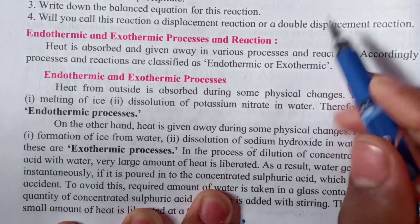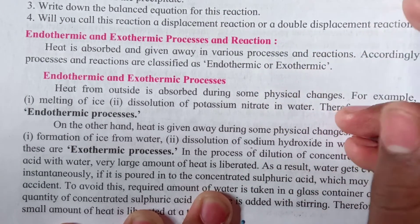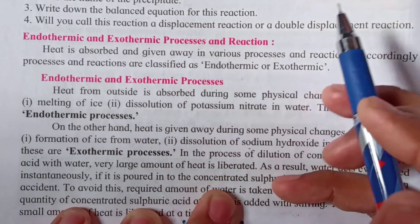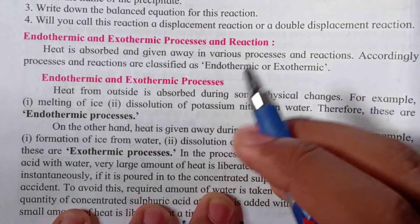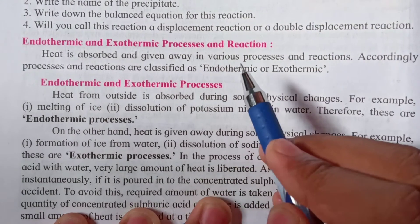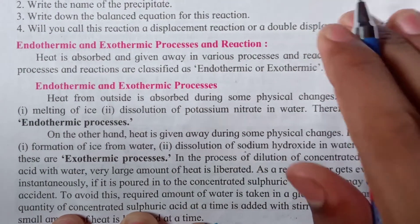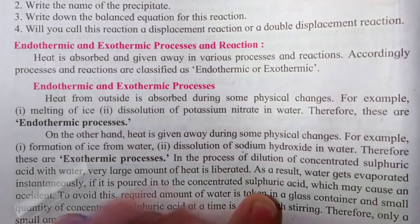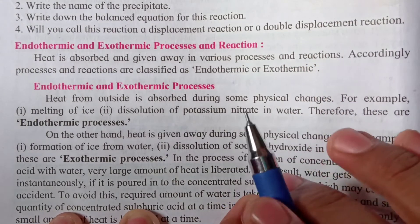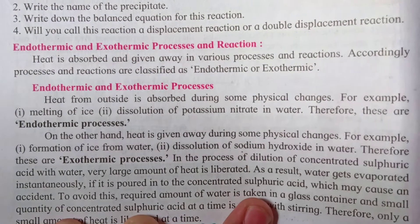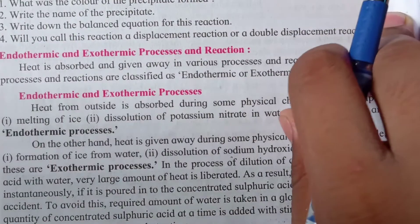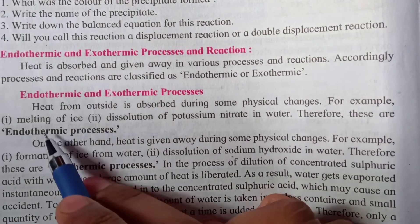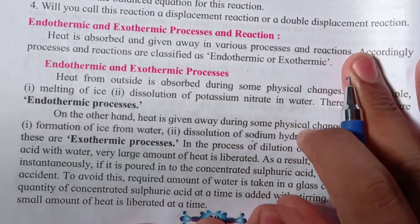First we'll see the meaning of exothermic and endothermic and how they are classified. Heat is absorbed and given away in various processes and reactions, and accordingly processes and reactions are classified as endothermic or exothermic. During any reaction, either heat is liberated or heat is absorbed. If heat is given out, the process is exothermic. If heat is absorbed for the reaction to take place, the process is endothermic.